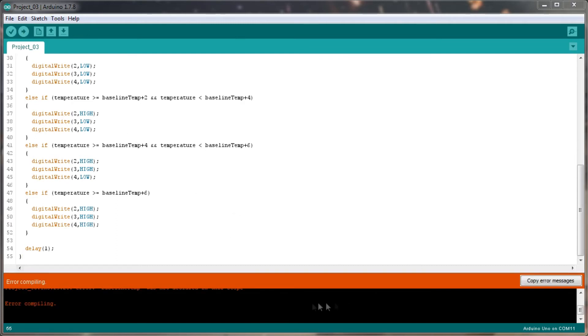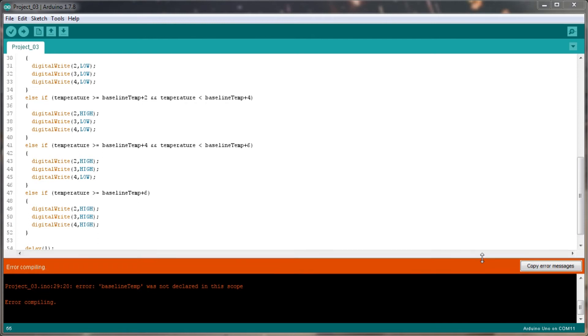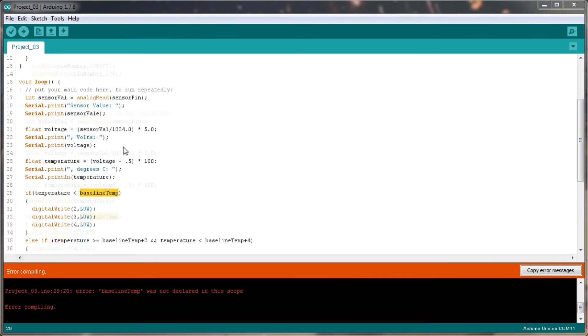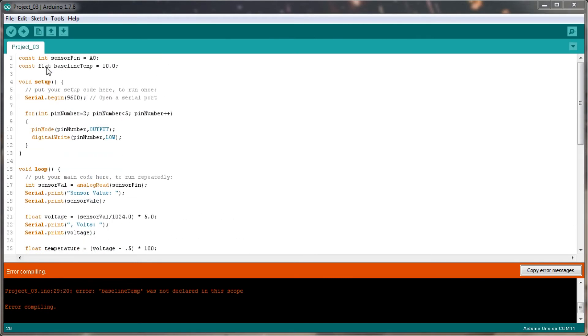Oh, so there's been an error compiling. Let's have a quick look at this error message. Baseline temp was not declared in this scope. Where has baseline temp come from then? Ah, that's because I misspelled the word float. So let's try that again.